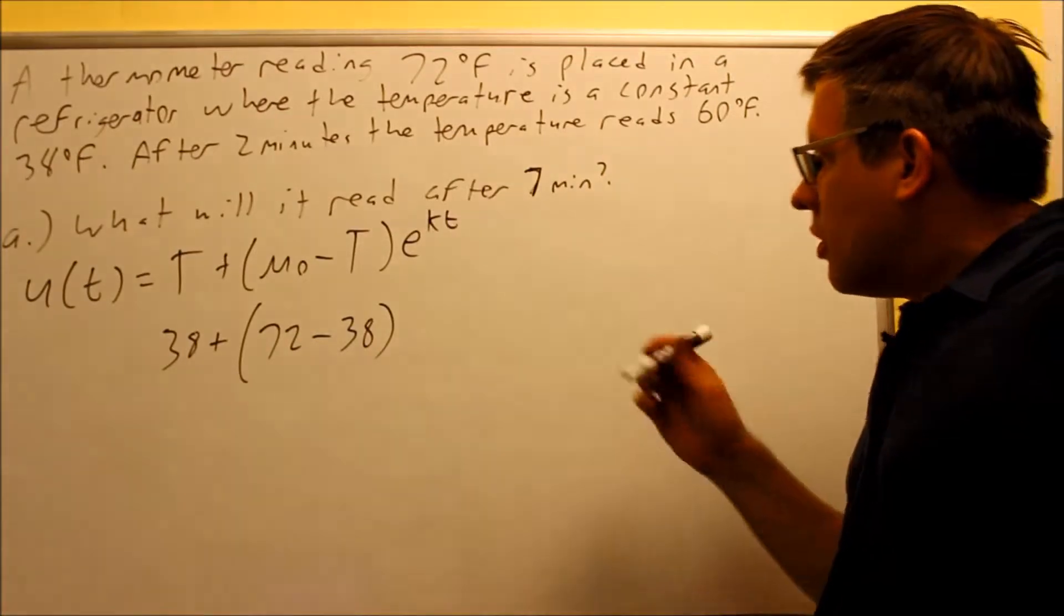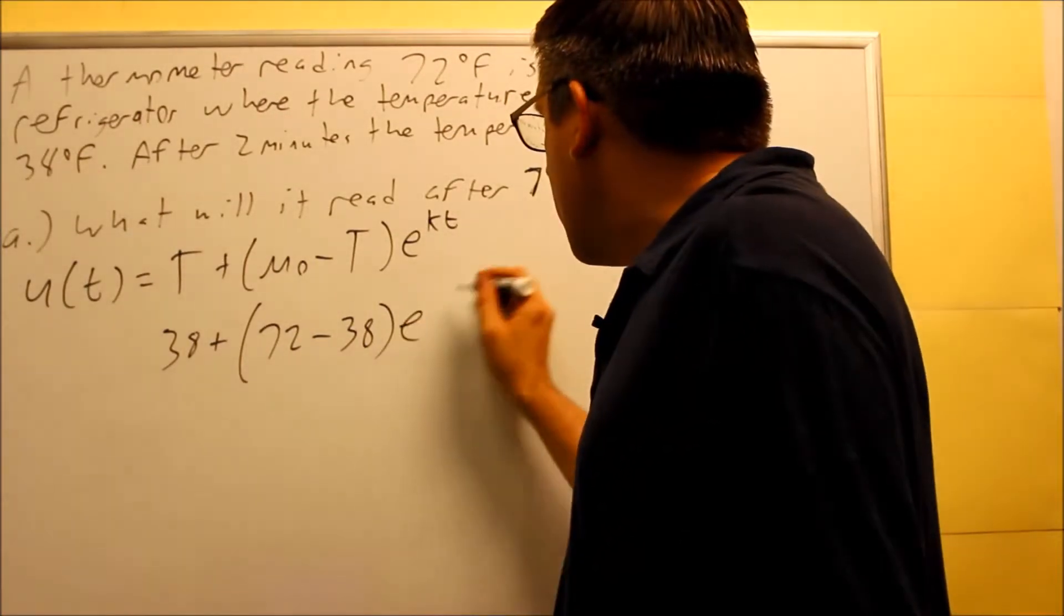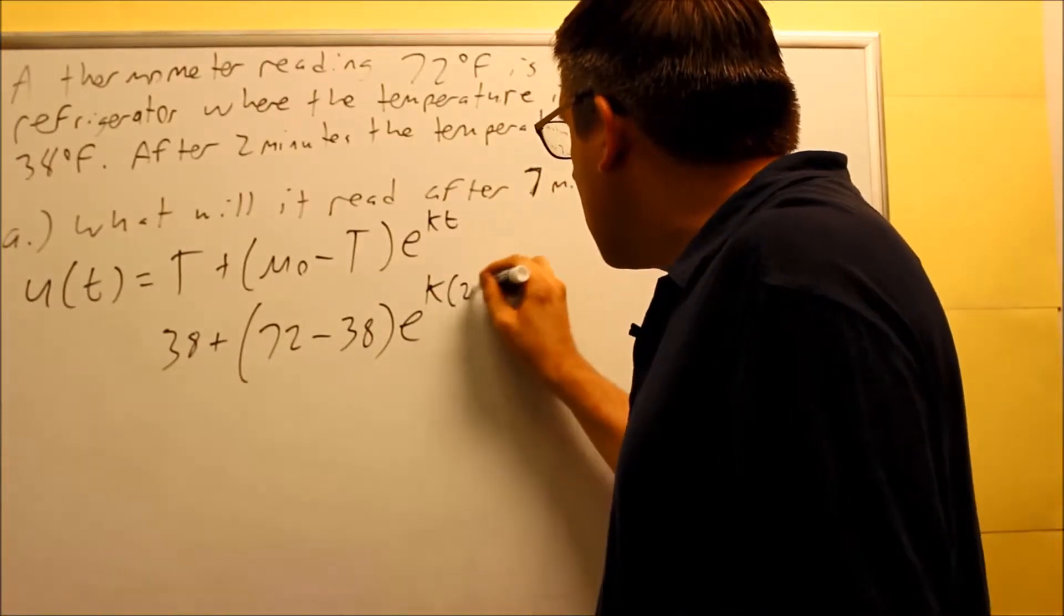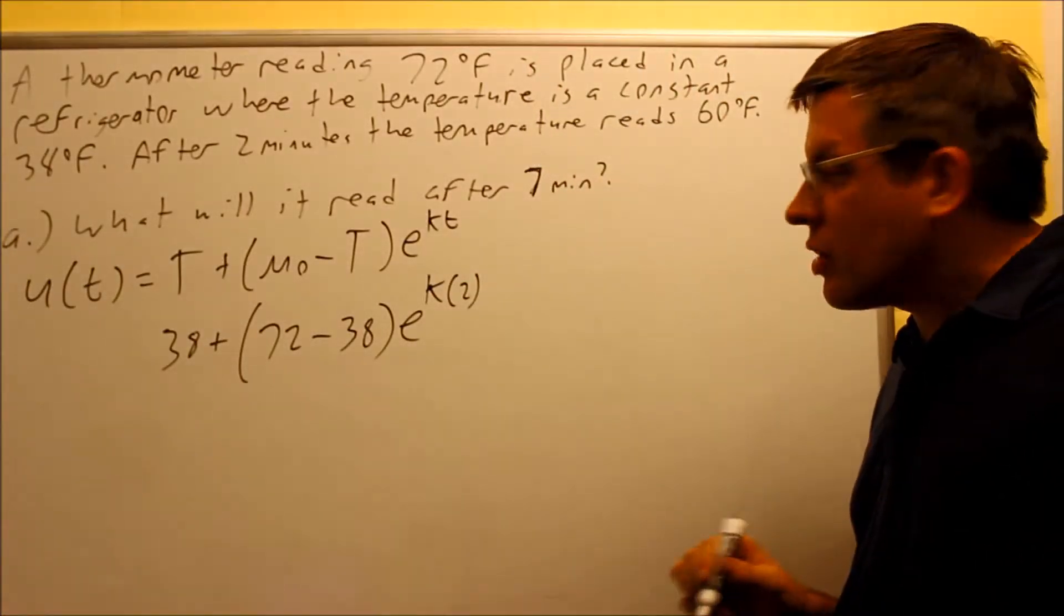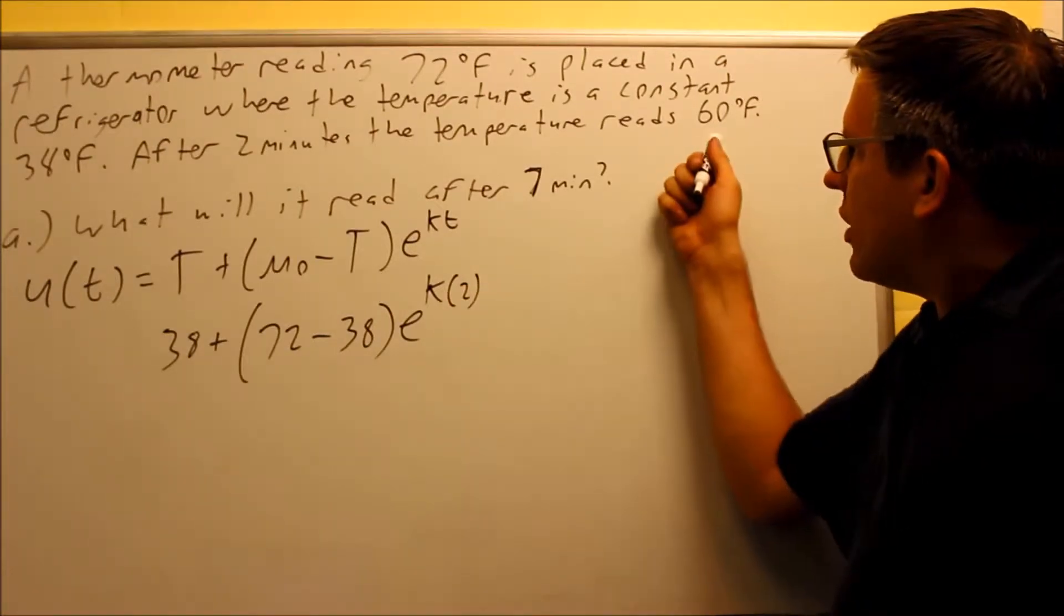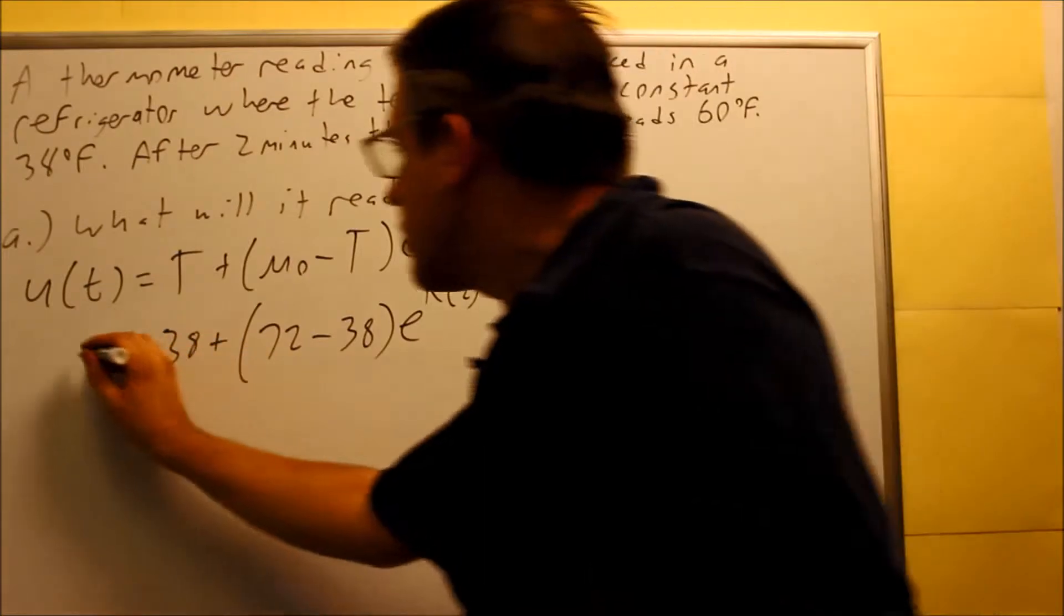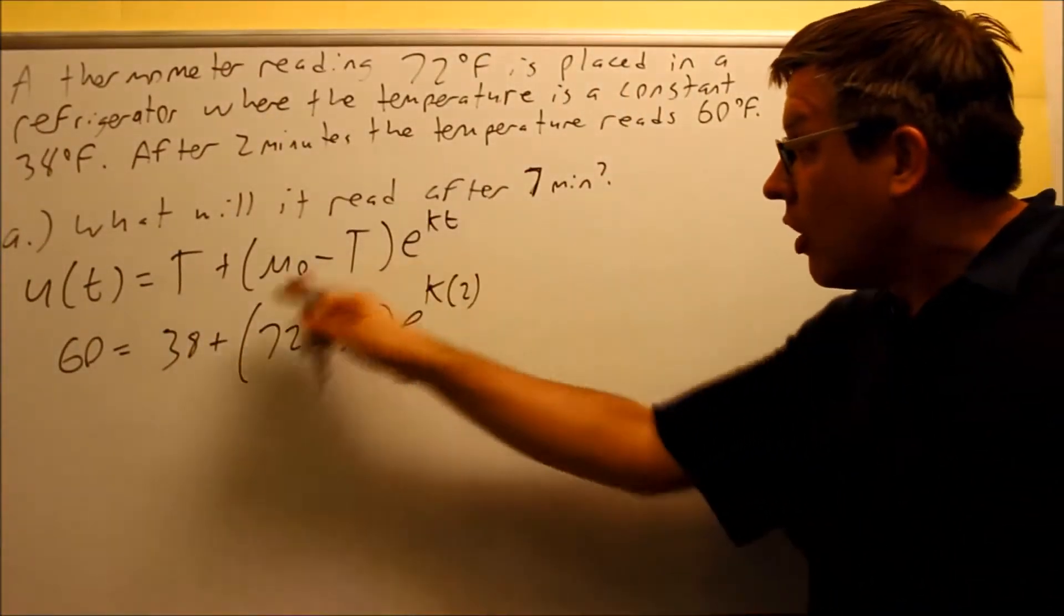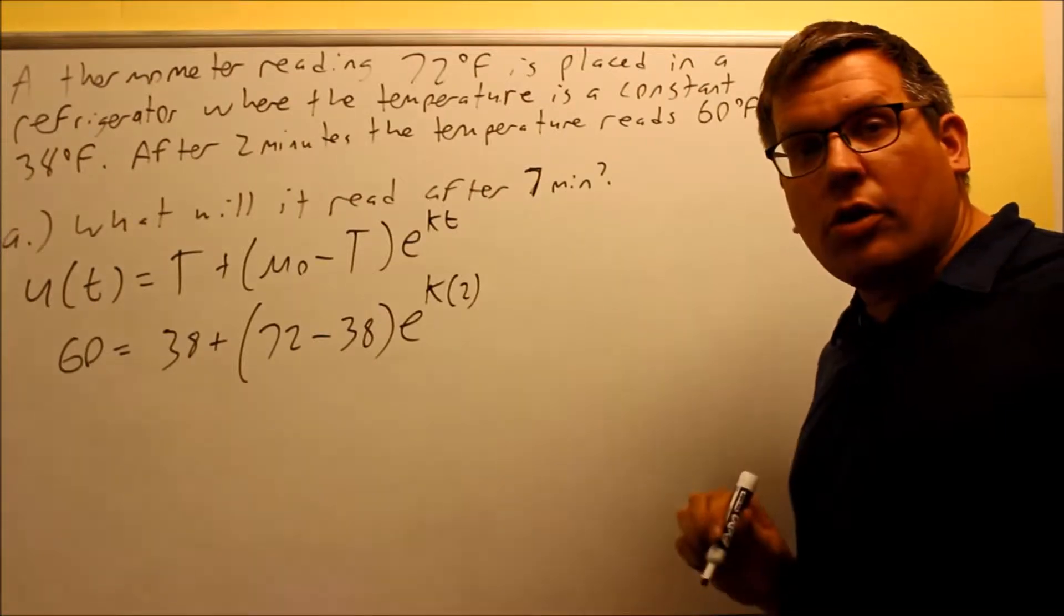After two minutes, so two minutes would be your T value, your value for time. My decay constant I don't know because I'm trying to solve for that one. The temperature reads 60 degrees after two minutes, that's going to go in over here on that side. Now we have all of our variables put in correctly.